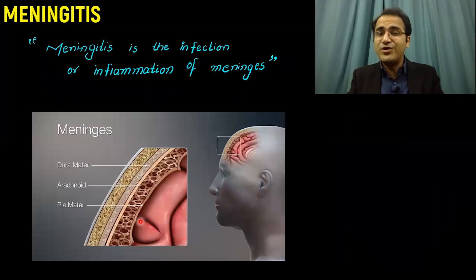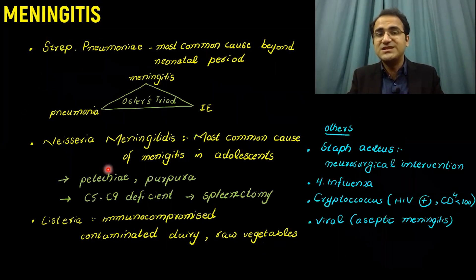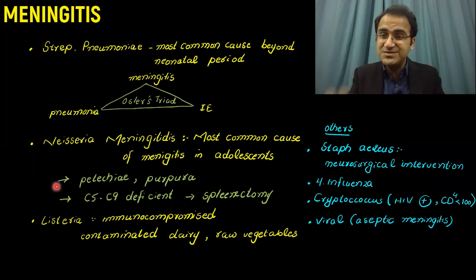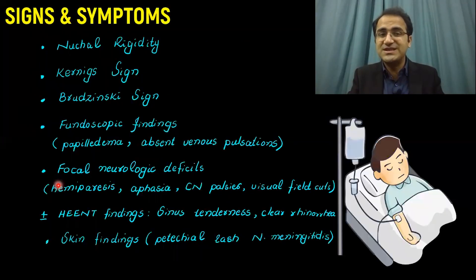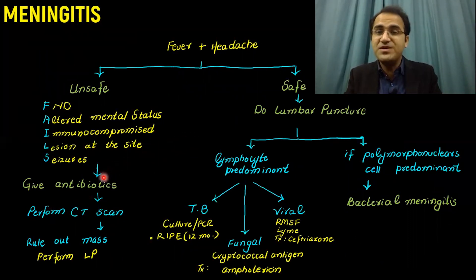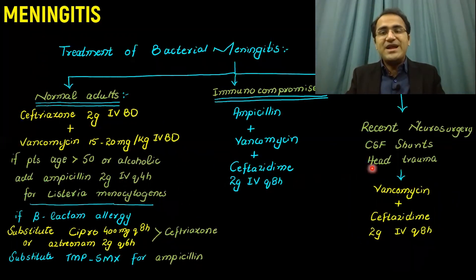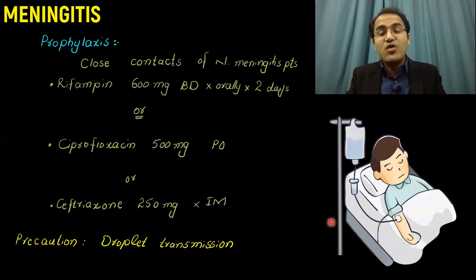In summary, we talked about what meningitis is, the symptoms and signs, the organisms that cause meningitis, the approach including when LP can and cannot be done, and the treatment for normal, immunocompromised, and neurosurgical patients, as well as prophylaxis.